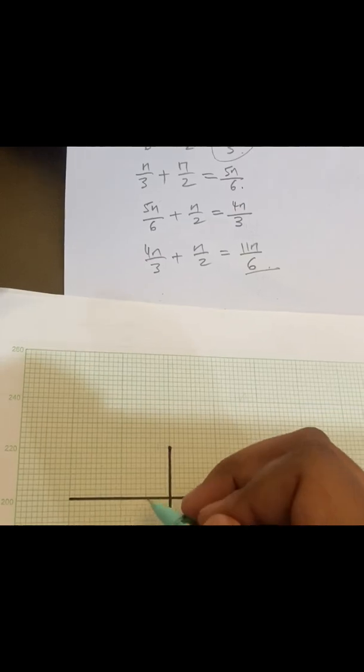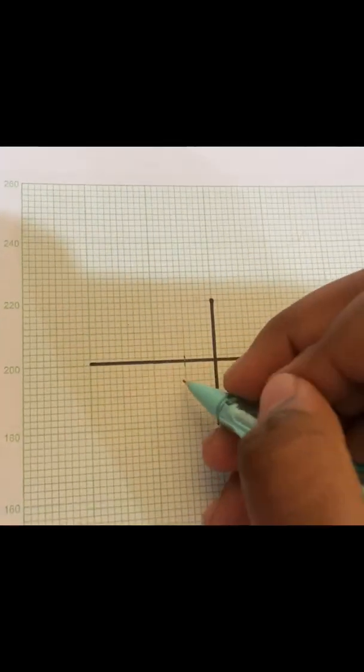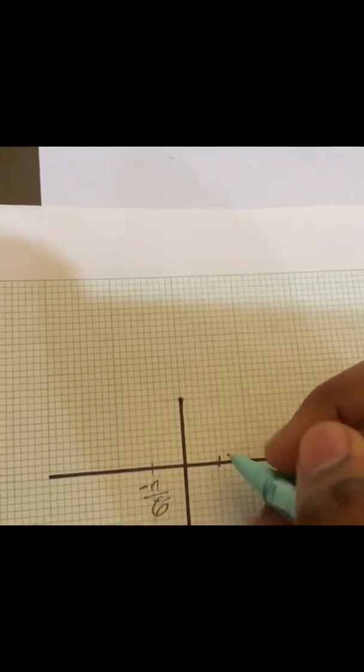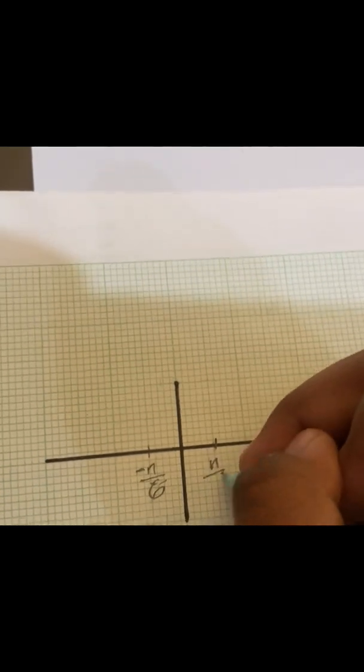First point will be negative π over 6. I'm sorry, negative π over 6. Second point will be negative π over 3. Then next, just refer here, 5π over 6, then 4π over 3.